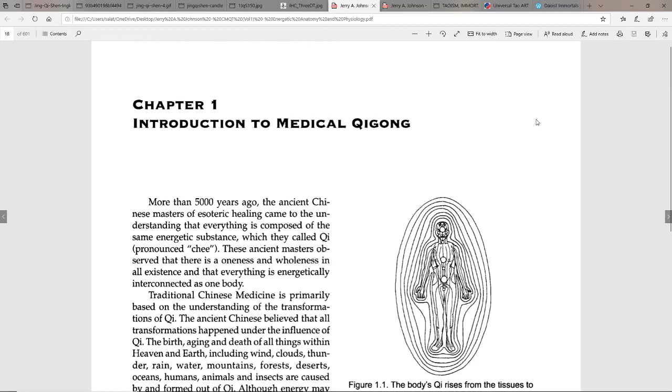As this says, more than 5,000 years ago the ancient Chinese masters of esoteric healing came to the understanding that everything is composed of the same energetic substance which they called Qi.